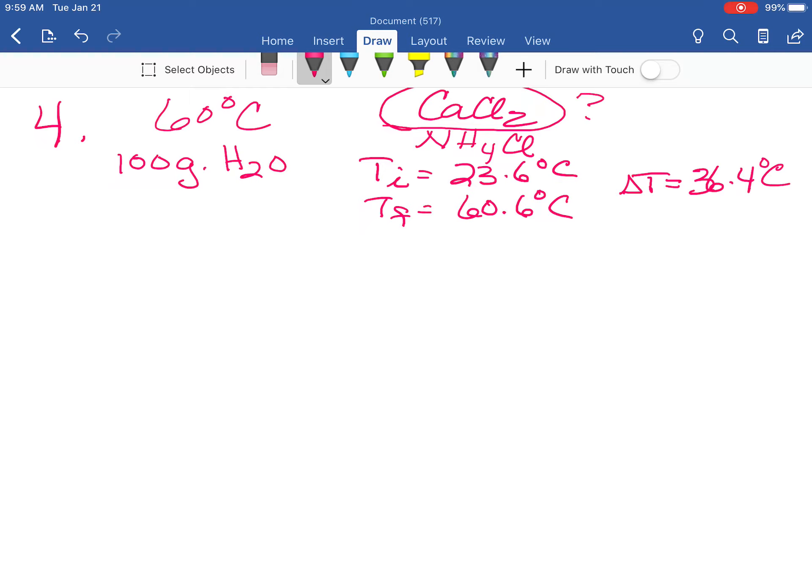And so for our calculations, our delta T will be 36.4 degrees Celsius. So that's what we'll use for our delta T.